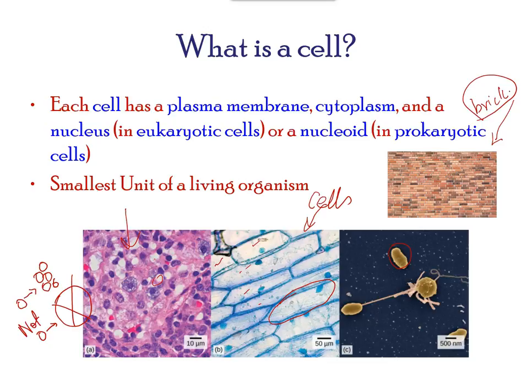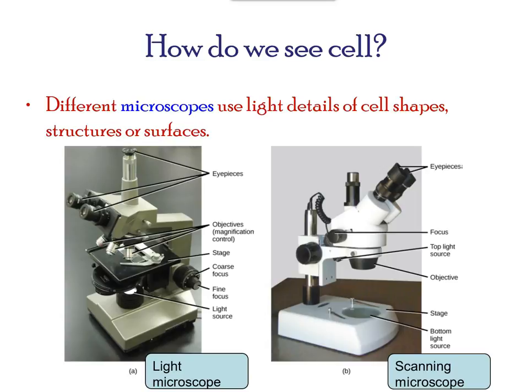Before discussing the criteria for determining whether a cell is prokaryote or eukaryote, let us examine how biologists study cells. Cells vary in size, and with few exceptions, individual cells are too small to be seen with the naked eye. Scientists use microscopes to study them. A microscope is an instrument that magnifies an object. Most images of cells are taken with a microscope and are called micrographs.